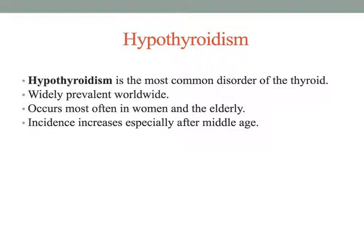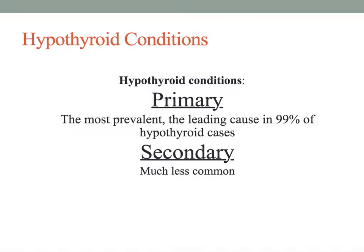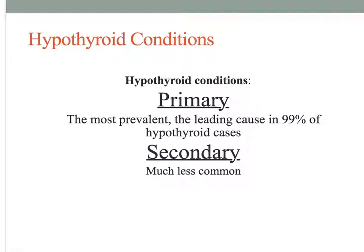This type of hypothyroidism occurs at least four times more often in women than in men, with an age of onset typically between 30 to 60 years of age. Hypothyroidism can be differentiated into primary and secondary causes. The most common primary cause is Hashimoto's thyroiditis, which is the most common cause of primary hypothyroidism in the United States.